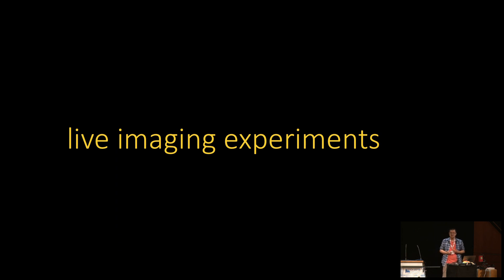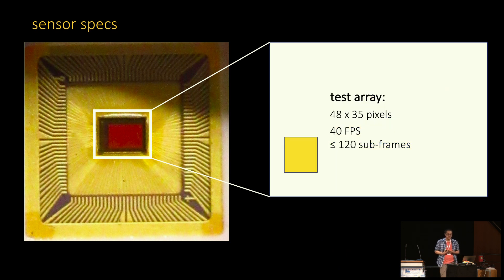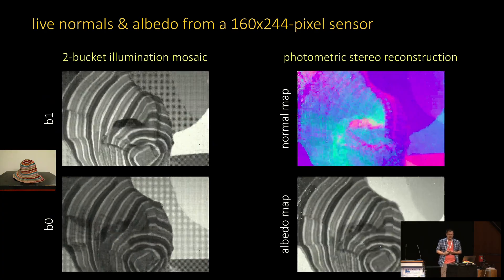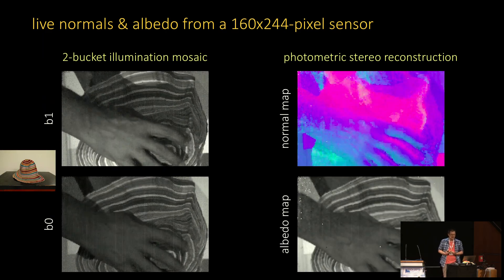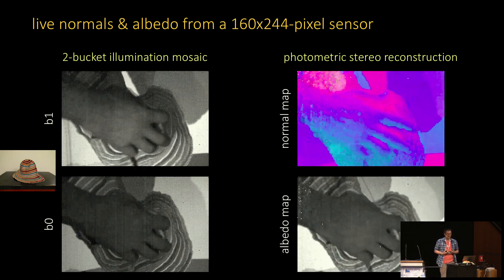Our sensor actually contains two pixel arrays: a large, slower array that supports up to four subframes, and a smaller test array that is 50 times faster. We're still configuring the fast array, so all the experiments shown are done with the slow array. Here's an example of live normal and albedo estimation for a deformable and very colorful object using four LEDs for illumination. Despite the low resolution of our sensor, the normals do capture the surface deformations, except for pixels in shadows of one of the lights.